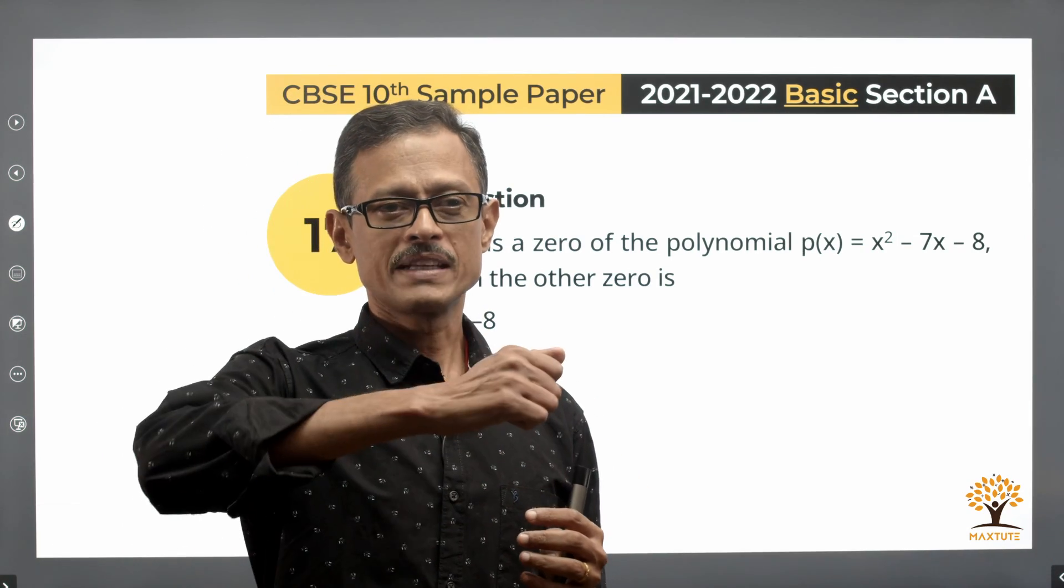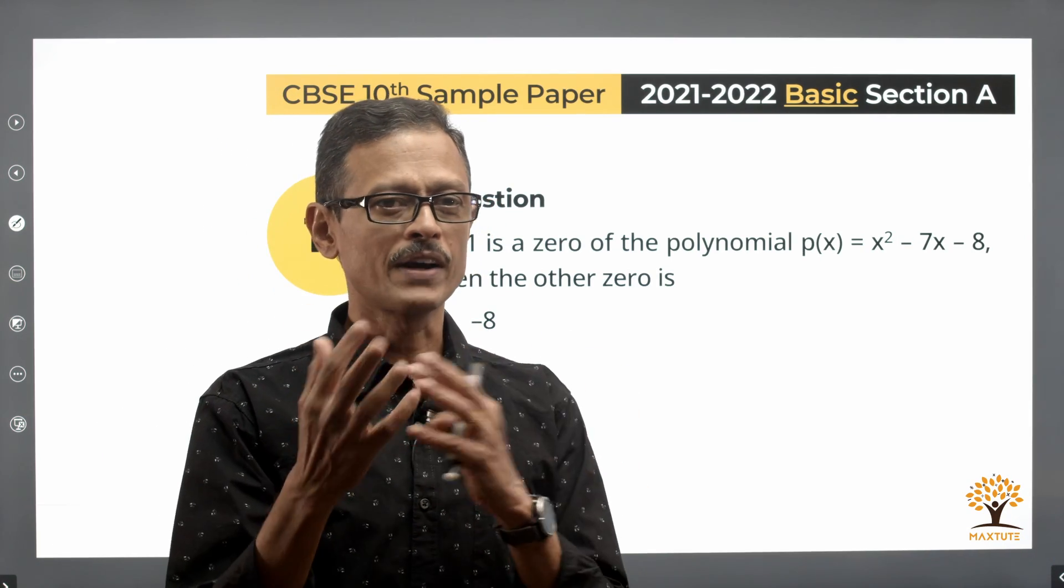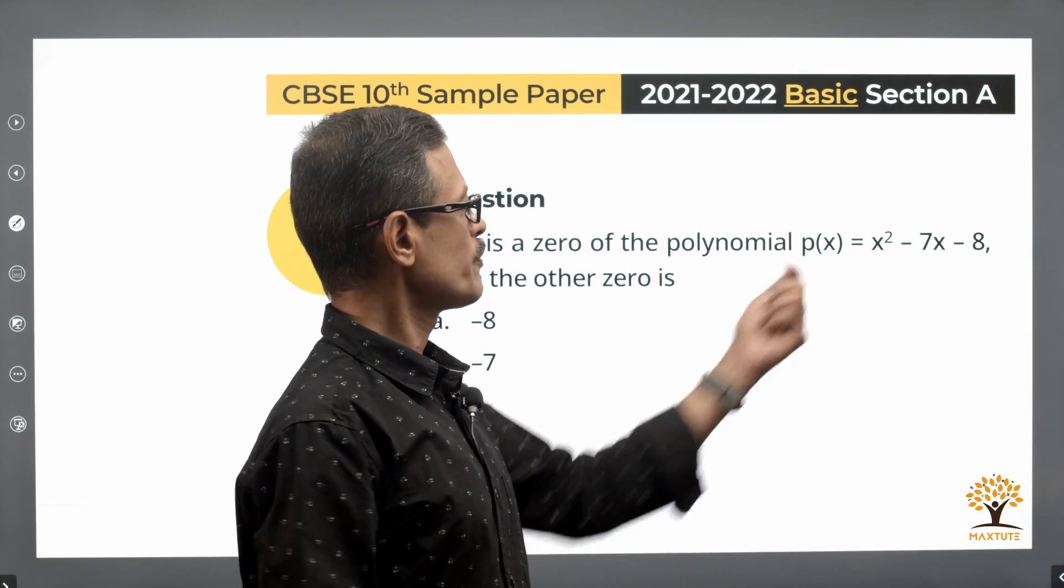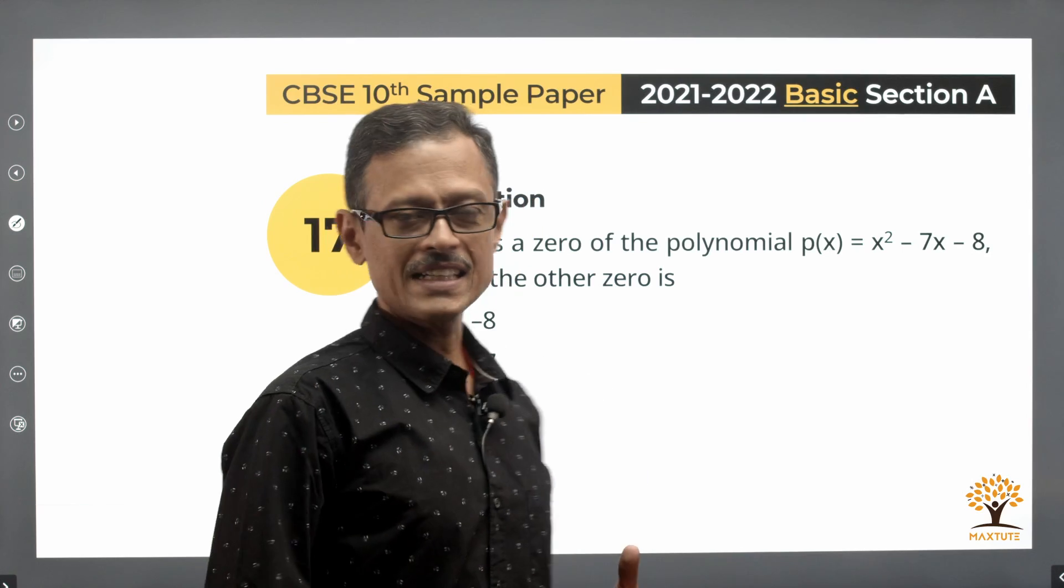Essentially the concept tested is finding out the sum and product of the zeros of a polynomial based on the coefficients of the polynomial. Let's get started.